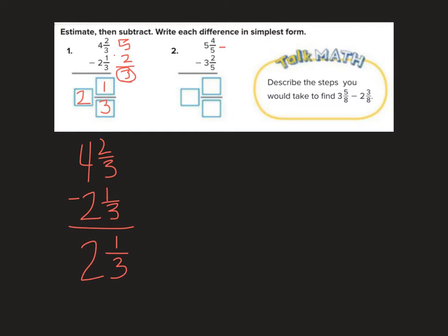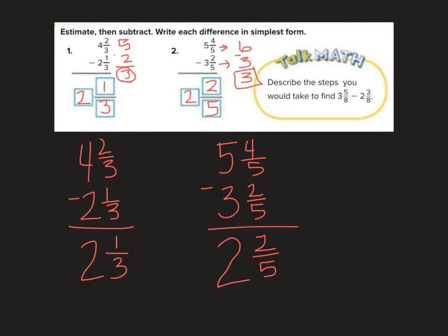Okay, so let's estimate this one. I would say this is 6 and this is 3. 6 minus 3, so again, our answer should be about 3. Okay, let's take a look. 5 and 4 fifths minus 3 and 2 fifths. 4 fifths minus 2 fifths is 2 fifths. 5 minus 3 is 2, so our answer is 2 and 2 fifths. Nice, those didn't even have to be simplified. They're already in simplest form.